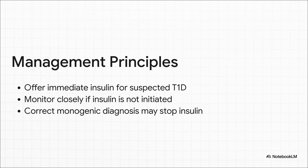The key management principles are crystal clear. Rule number one: if you even suspect type 1 in an adult, your default should be to offer insulin, even if you're waiting on tests. On the flip side, getting that monogenic diabetes diagnosis right is a massive win because many of those patients can actually come off insulin and get better control with just oral medications.